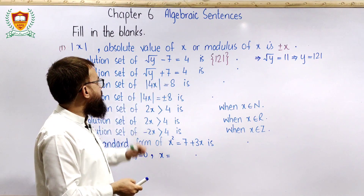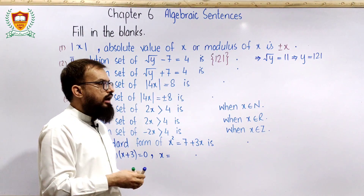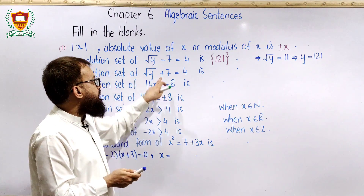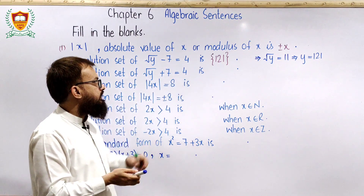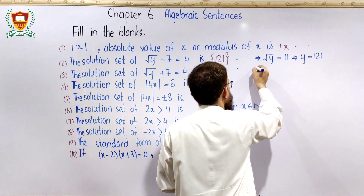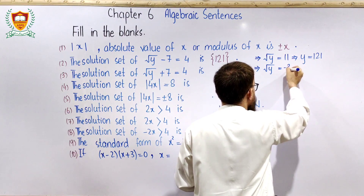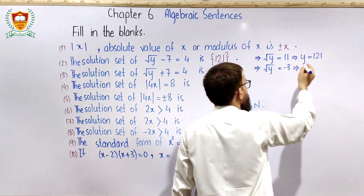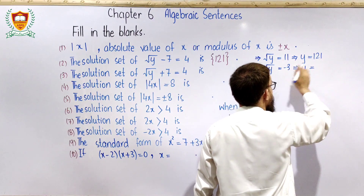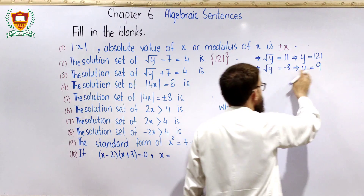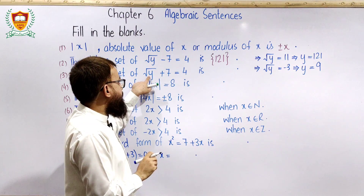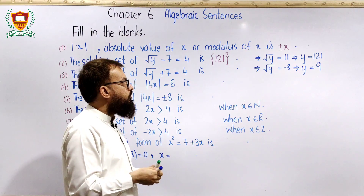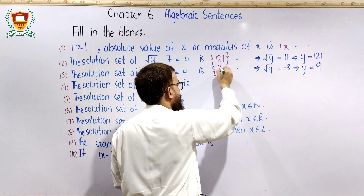اب دوسری possibility: √(y+7) = 4۔ Simplify کرتے ہیں: √y = 4 − 7 = −3۔ Squaring on both sides: y = 9۔ لیکن verification کریں تو √9 = 3 اور 3 + 7 = 10 ≠ 4 — یہ verify نہیں ہوا، اس لیے اس کا solution set empty set ہے۔